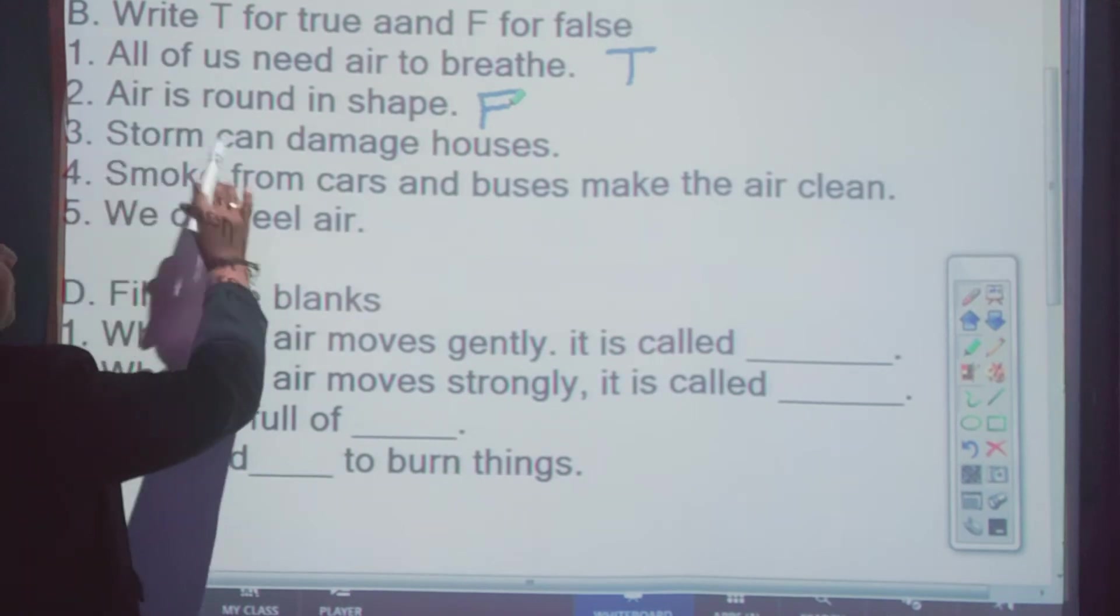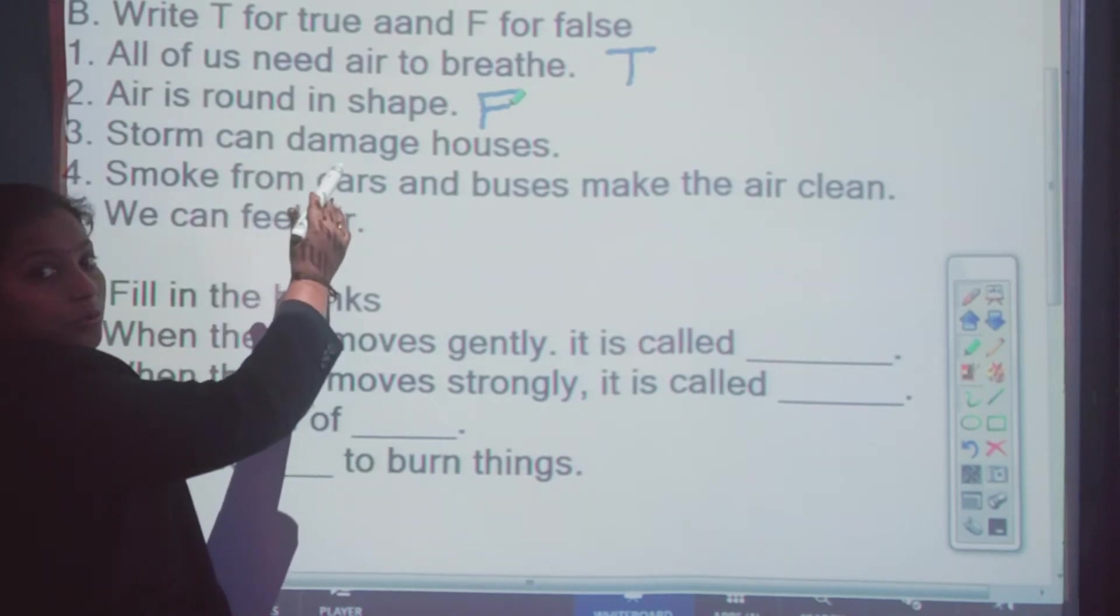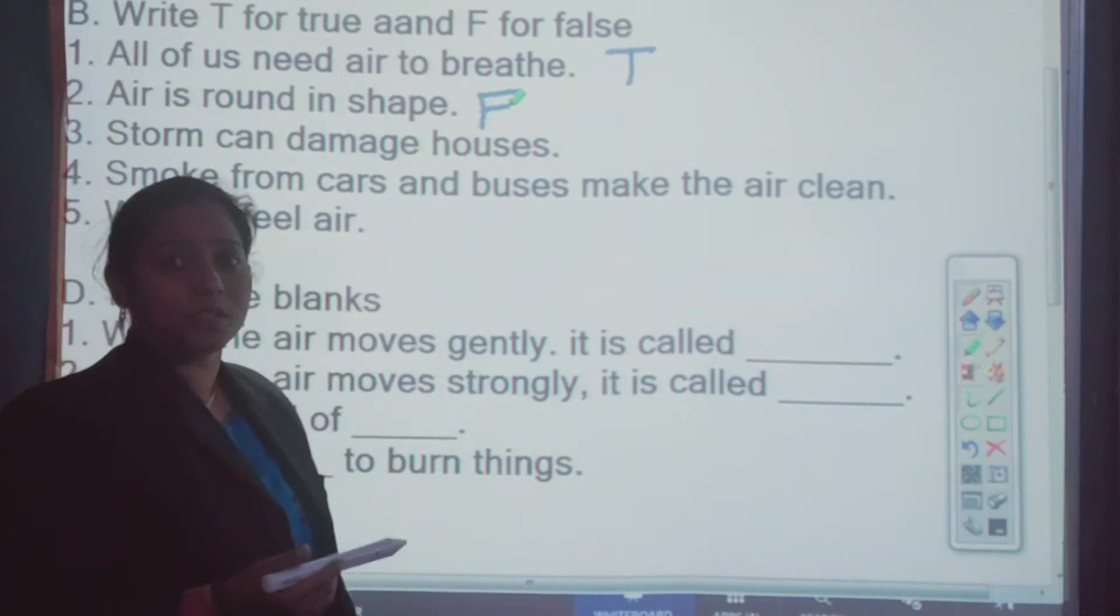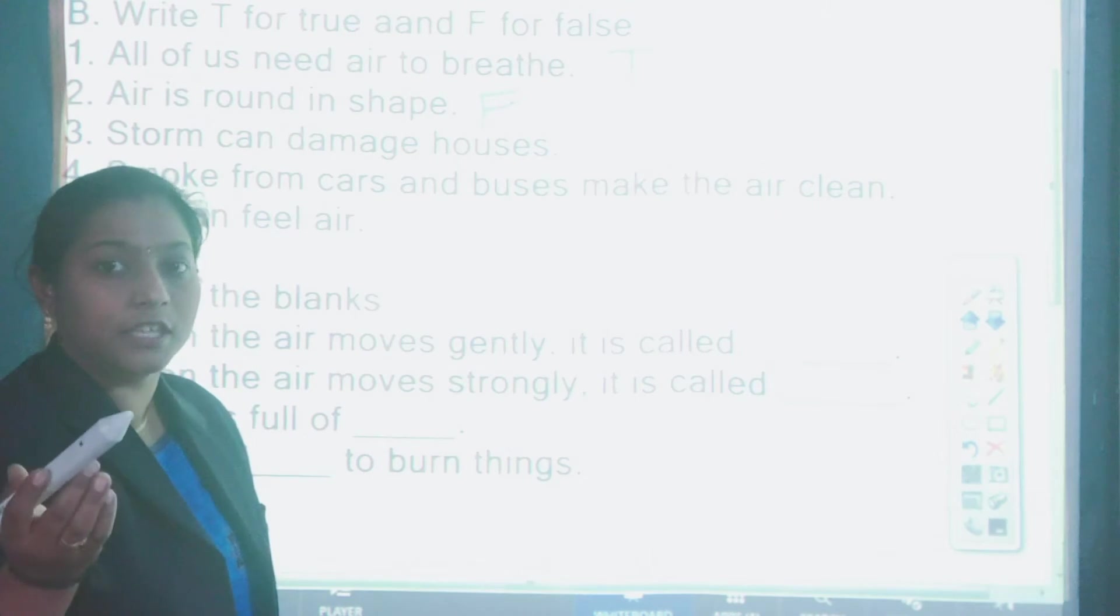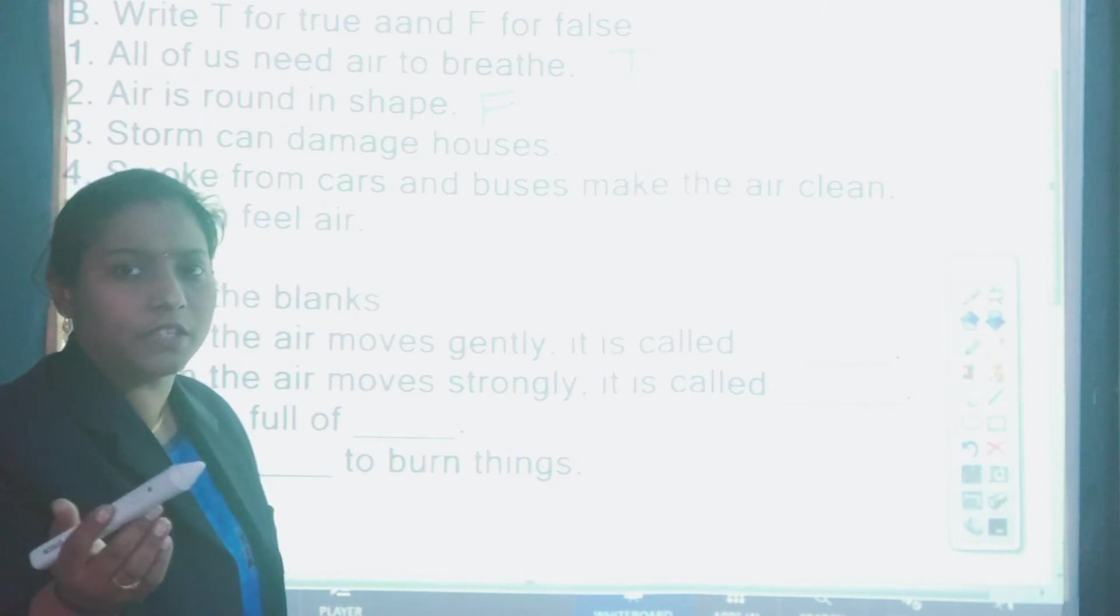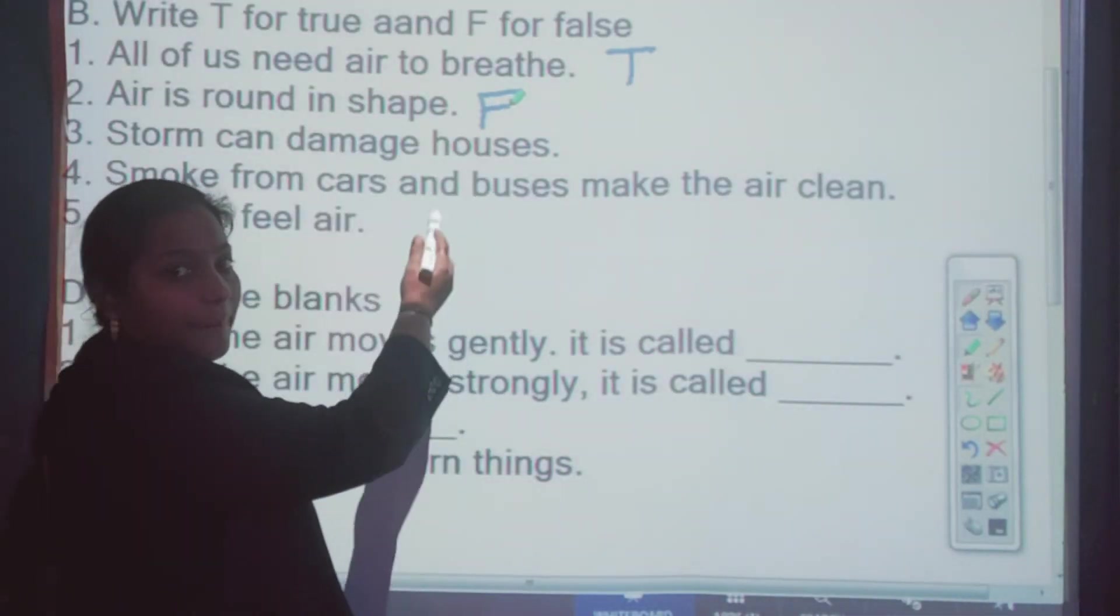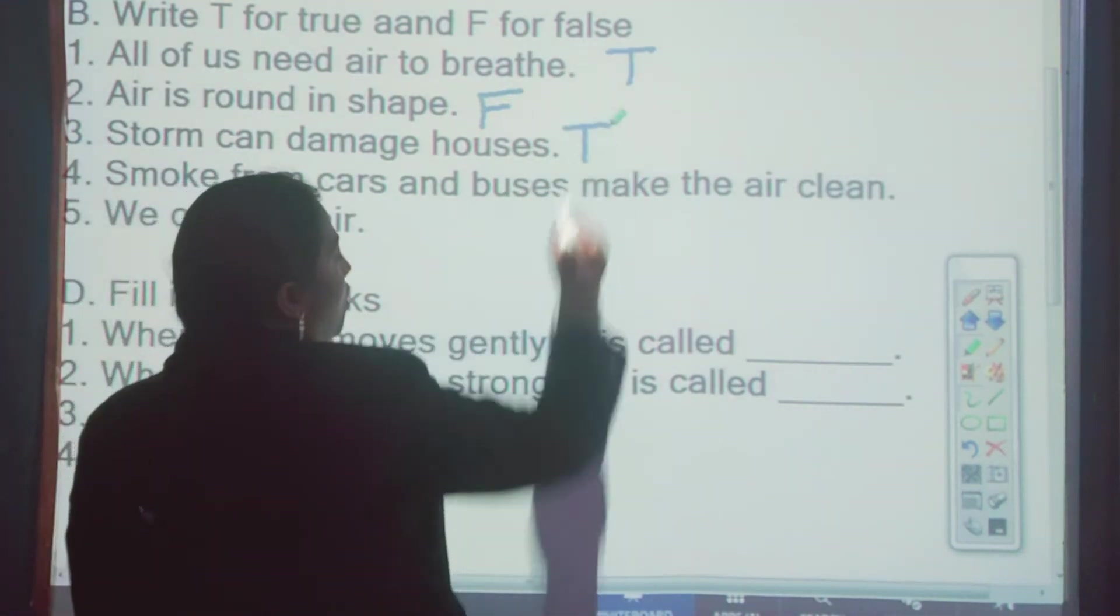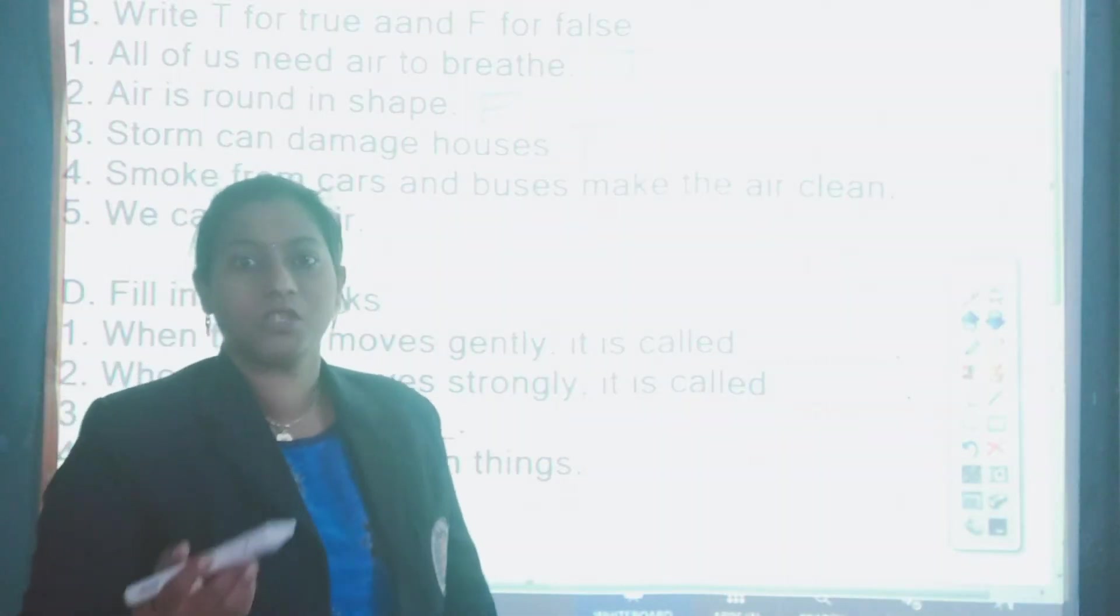Next third one. Storm can damage houses. Damage matlab? Tod dena, forward dena. Damage matlab kuch nuksan karna things, houses. Storm means toofan, strong wind, very strong wind that can blow away your houses, trees. That is called storm. Storm can damage houses. Damage means nuksan kar sakta hai hamare houses ko? Yes, that is true. The storm is very strong. The strong wind hoti hai, jo hamare houses ko, hamari cheezho ko damage kar sakta hai. Right?